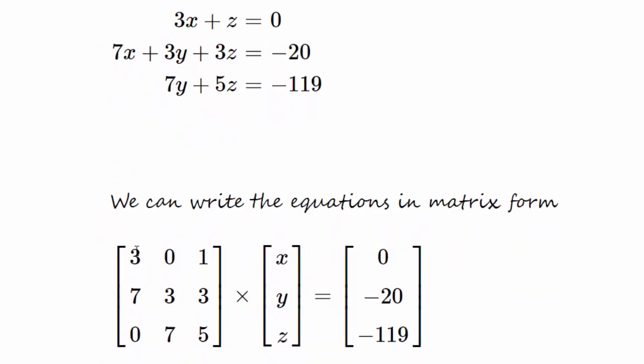We've got 3x which is the 3 here, there are no y's which is why we have a 0 here, and 1z which is why we have 1 there. 7, 3, 3, and then there's no x in the final line so there's a 0 here and 7 and 5. We multiply that by x, y, and z which are the variables on the left hand side, and then the constants on the right hand side are this column matrix here: 0, minus 20, and minus 119.